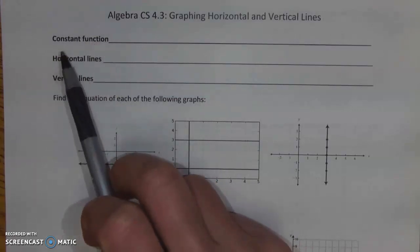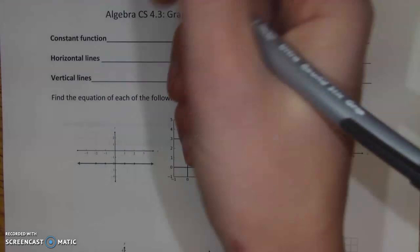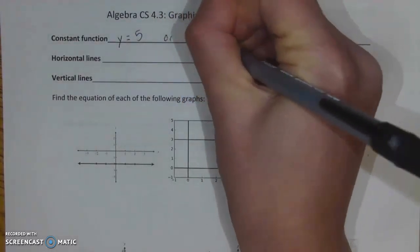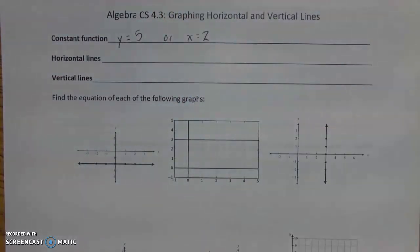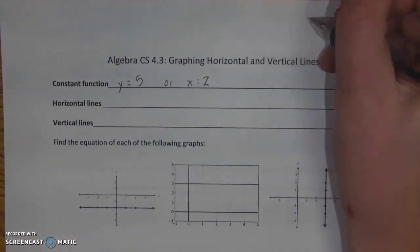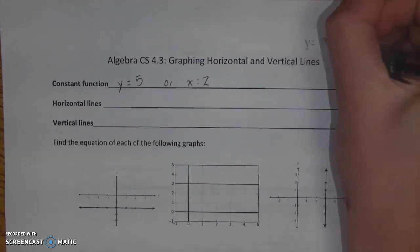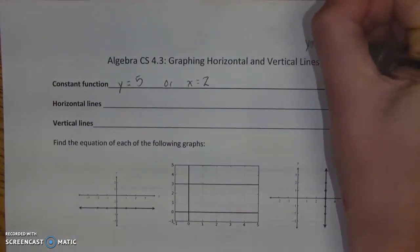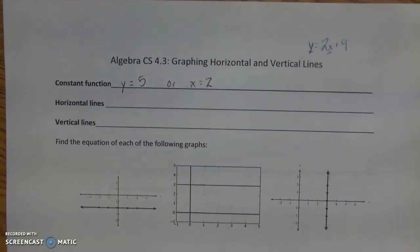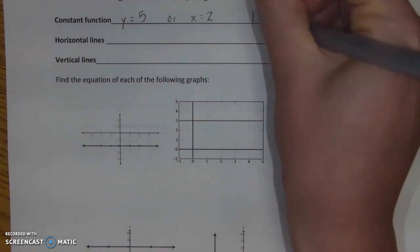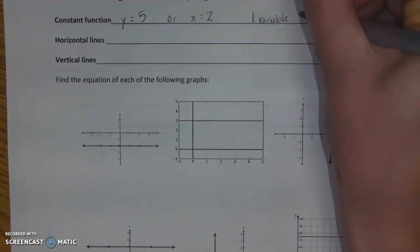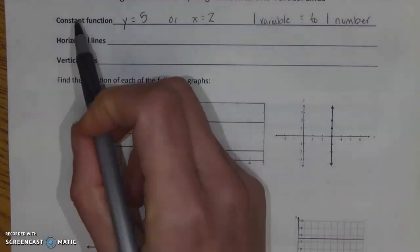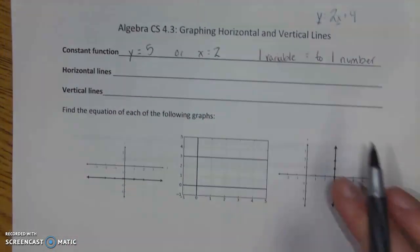These weirdos pop up when we're dealing with what we call a constant function. A constant function is when you have a variable equal to a single number, like y equals 5 or x equals 2. Notice how equations that are not constant functions — like y equals 2x plus 9 — have both an x and a y. For a constant function, you need one variable equal to one number.